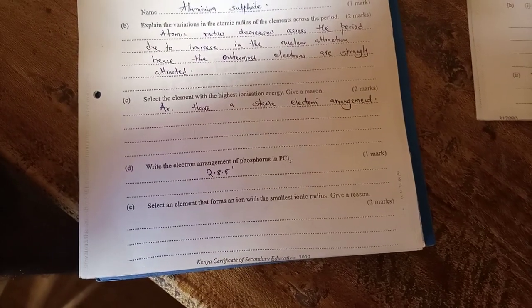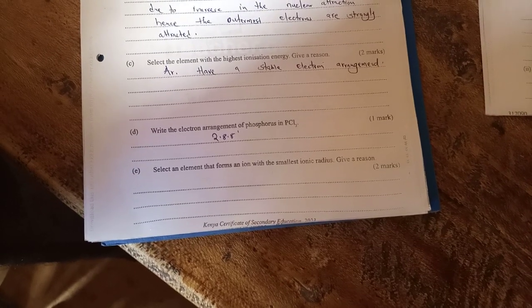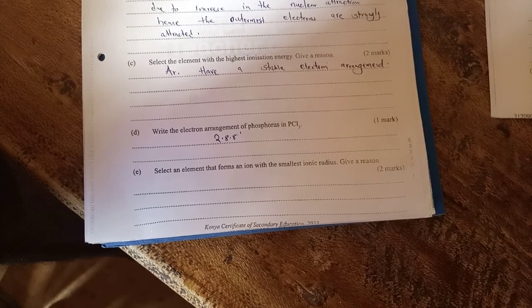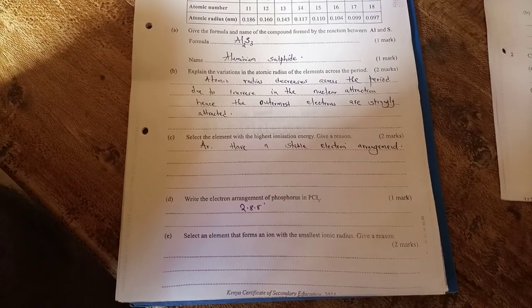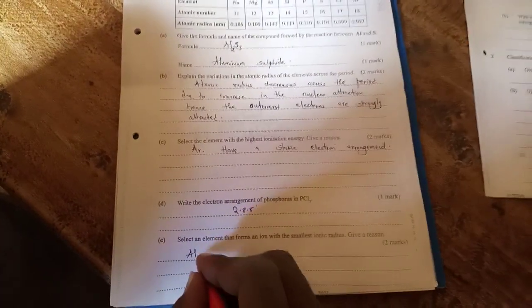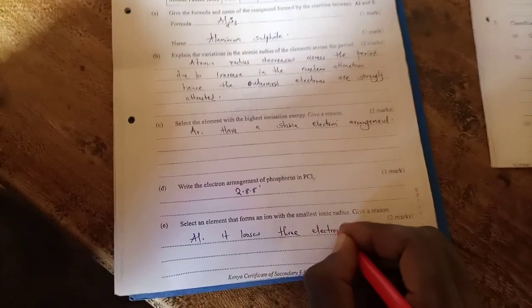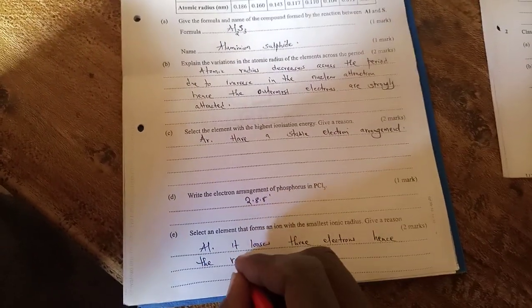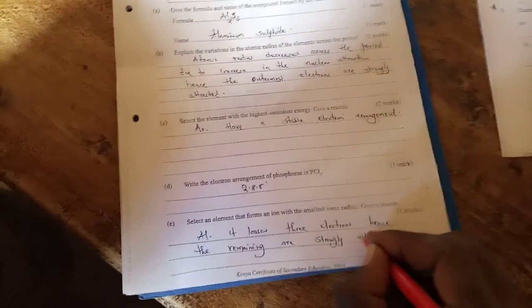Select an element that forms an ion with the smallest ionic radius and give a reason. The ionic radius is from the center of the ion to the outermost energy level occupied by the electrons. In this case, we are looking at the metals. The metals are the ones which lose electrons to form a smaller ionic radius. The element which will lose many electrons is aluminium. It loses 3 electrons. Hence, the remaining electrons are strongly attracted by the positive nucleus.